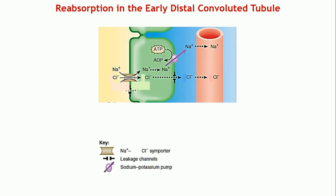In the early distal convoluted tubule, the transporter present is the sodium-chloride symporter — one sodium ion and one chloride ion move into the cell together and are reabsorbed. Sodium travels into the blood via the sodium pump, and chloride moves into the interstitial fluid through leakage channels, then enters blood circulation. Only reabsorption of sodium and chloride takes place in this region.